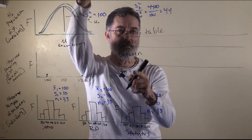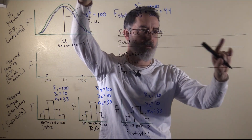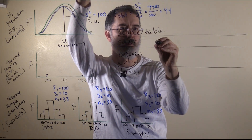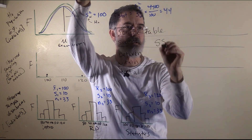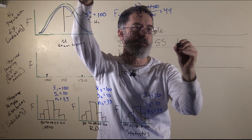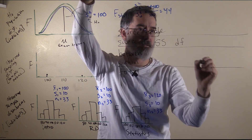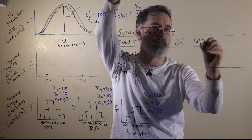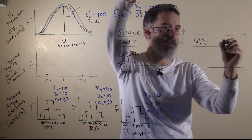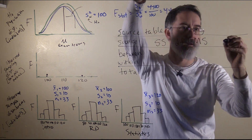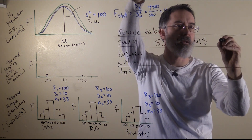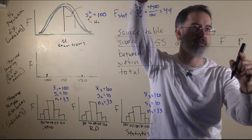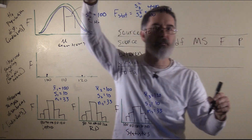There is the source, and then there are the different kinds of things that are associated with each. One is the sums of squares. Another is degrees of freedom. Another is the mean square. Then we have an F and our p-value — this is the F statistic and our p-value.